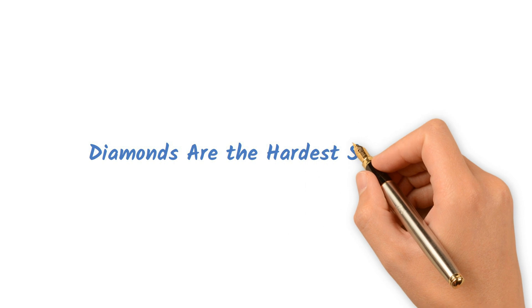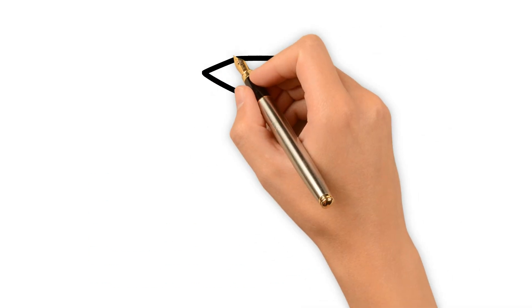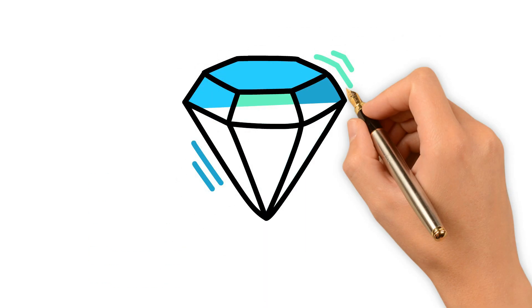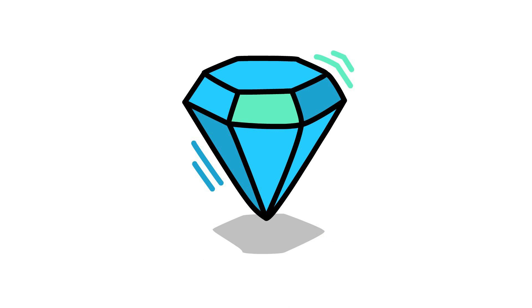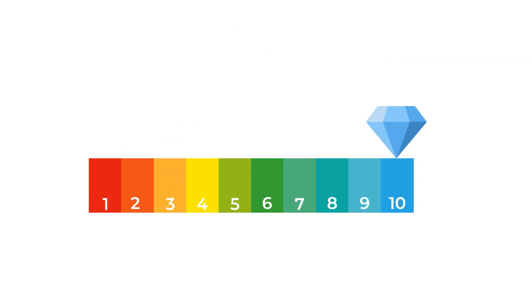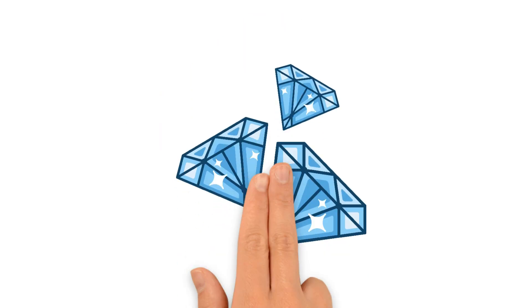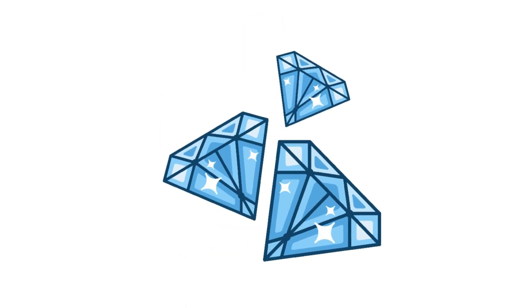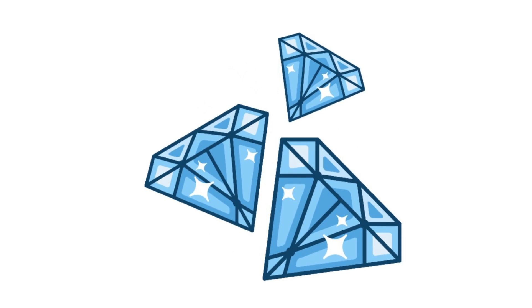Diamonds are the hardest substance. While incredibly hard, diamonds can be scratched by a specific type of stronger diamond. The hardness of a material is measured on the Mohs scale, with diamond being a 10. However, a specific crystal direction within a diamond can be scratched by another diamond with the right orientation.